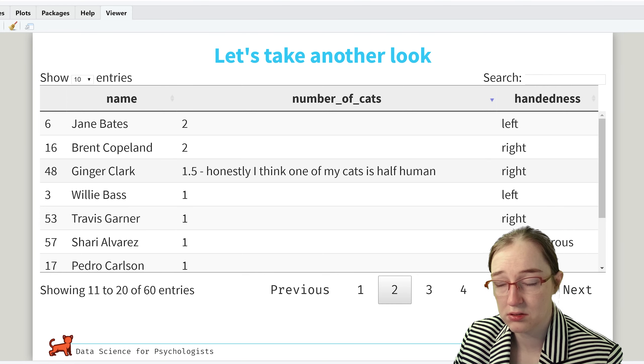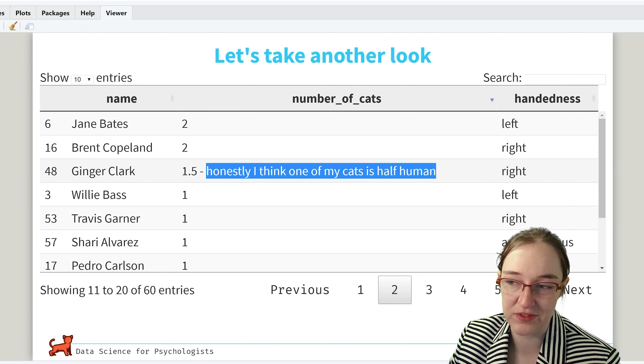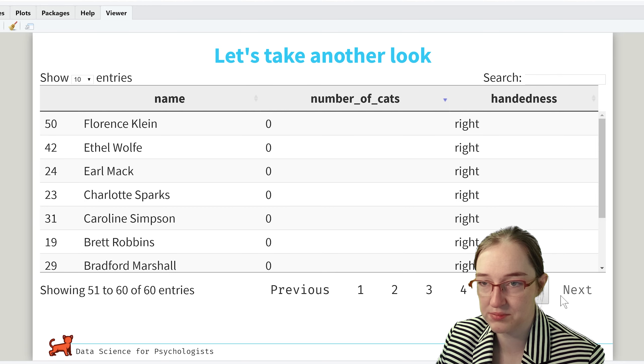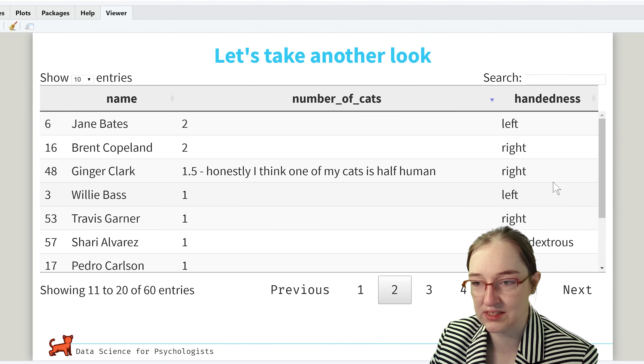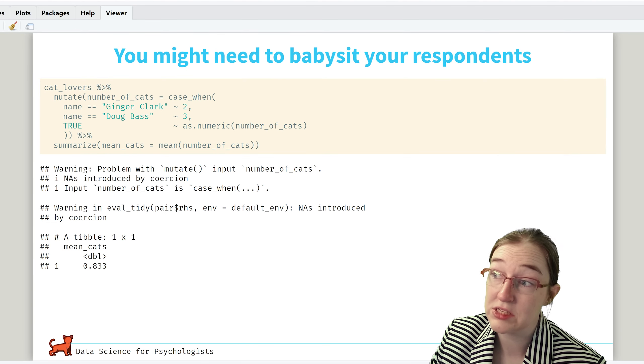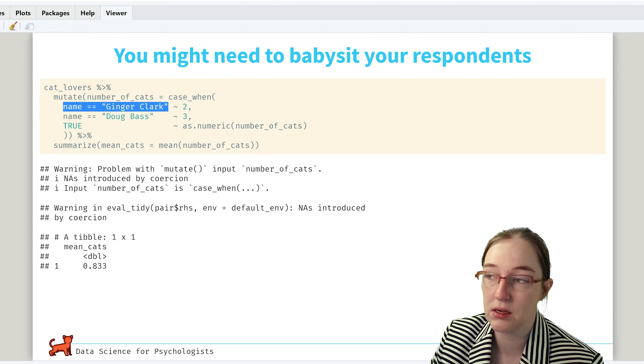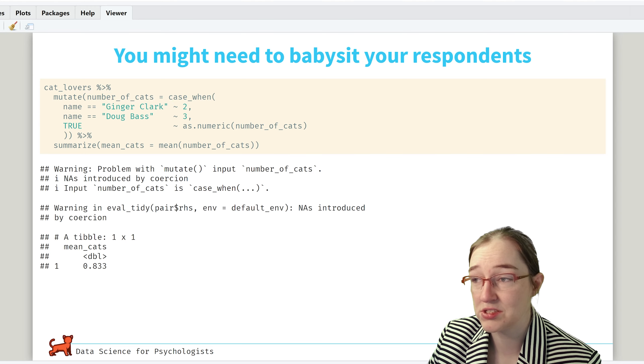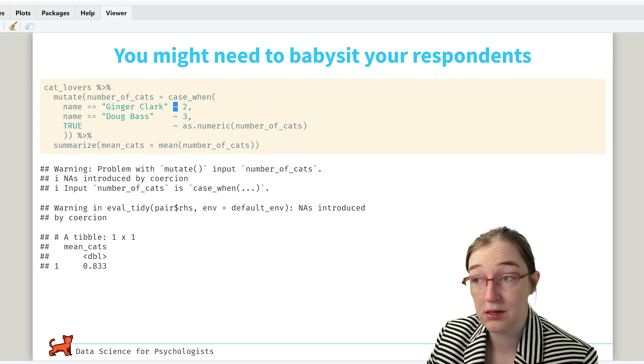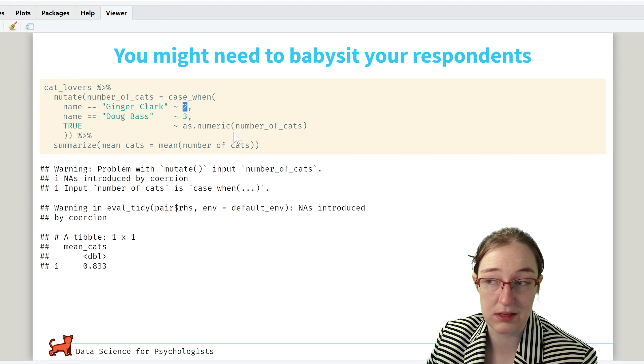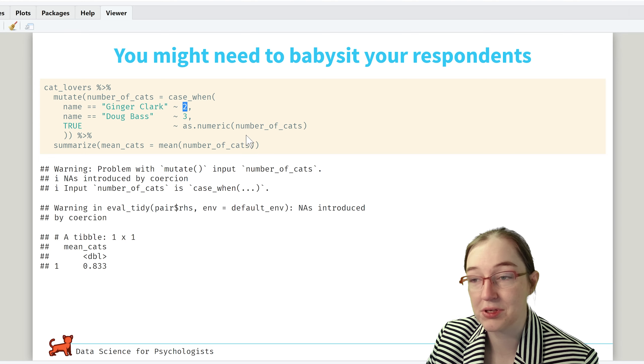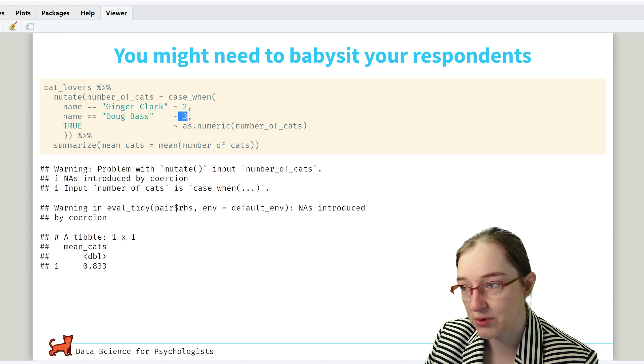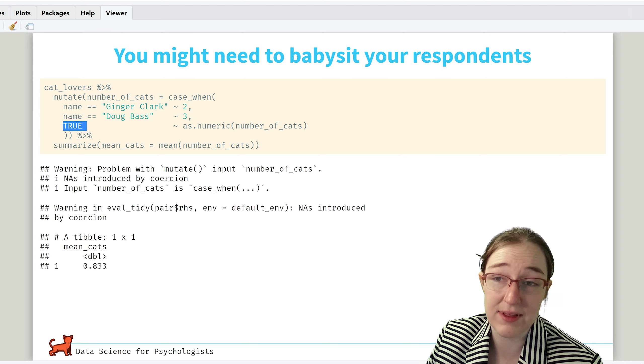So Ginger Clark really means, this is cute, but it's not helpful for a data analysis. So we're gonna have to turn Ginger Clark's answer into a zero. There are probably some others. So those two folks, Ginger Clark, we're mutating her data to number of cats, and using the case_when function. So case_when, name equals Ginger Clark, we're gonna assign number of cats to be two, we're rounding, and then just purging all of Ginger's adorable commentary. And we're also fixing Doug Bass, who did not follow directions, to three.